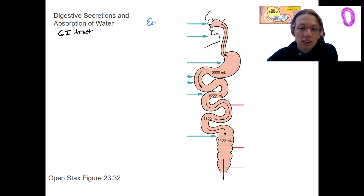We can eat and drink. This is about 2000 milliliters a day. We're going to look at everything over a day. We've got various digestive secretions. This includes saliva.